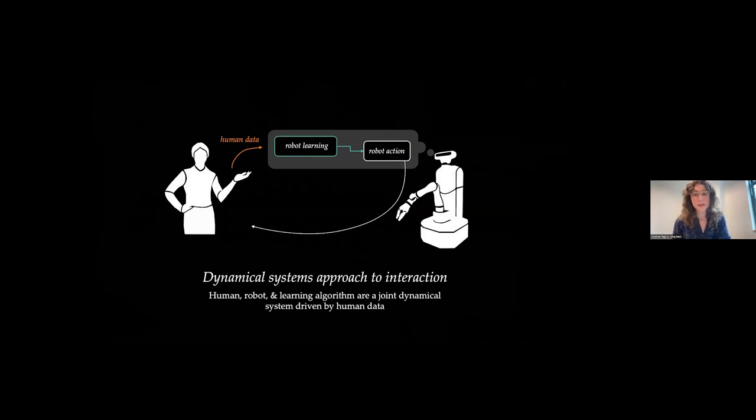To model this complex interplay between humans, robots, and their learning algorithms, we take a dynamical systems approach to interaction. Our research develops theoretical frameworks and practical algorithms, drawing upon methods from optimal control, dynamic game theory, Bayesian inference, and deep learning.